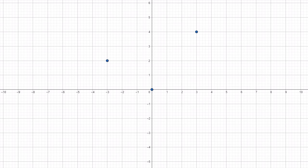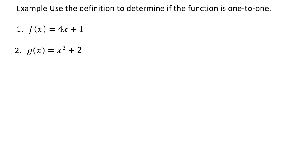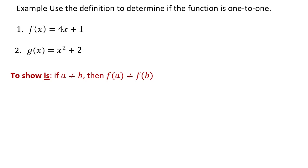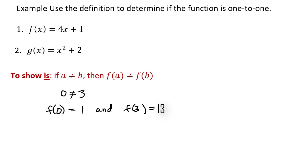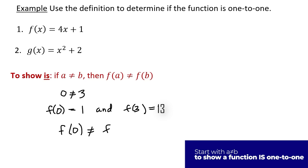In this example, we are asked to use the definition to determine if the given function is one-to-one. For number one, f(x) = 4x + 1, a linear function. Just imagining the horizontal line test, I think it is one-to-one. When using the definition, to show that something is one-to-one, I start with two unequal x values and show I arrive at two unequal y values. Since 0 ≠ 3, f(0) = 1 and f(3) = 13. Since 1 ≠ 13, f(0) ≠ f(3), therefore f is one-to-one.